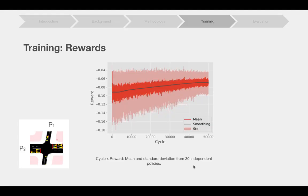The next step is the training. Here we discuss only the training for the intersection scenario. We run 30 independent training experiments with different seeds for 50,000 cycles of 60 seconds each, that amounts to about 35 days of simulation time,